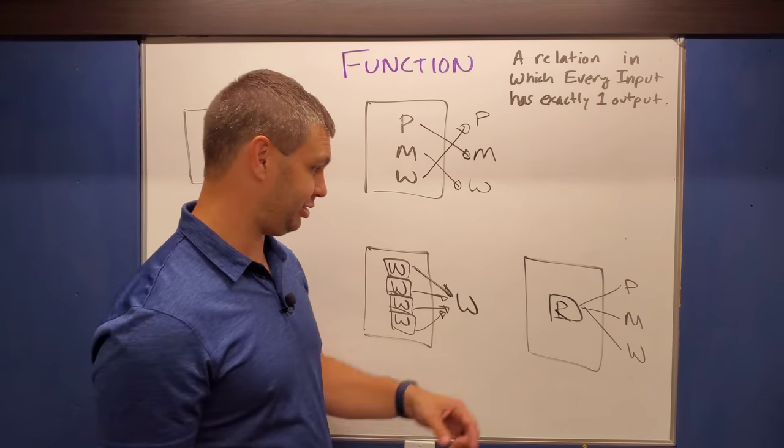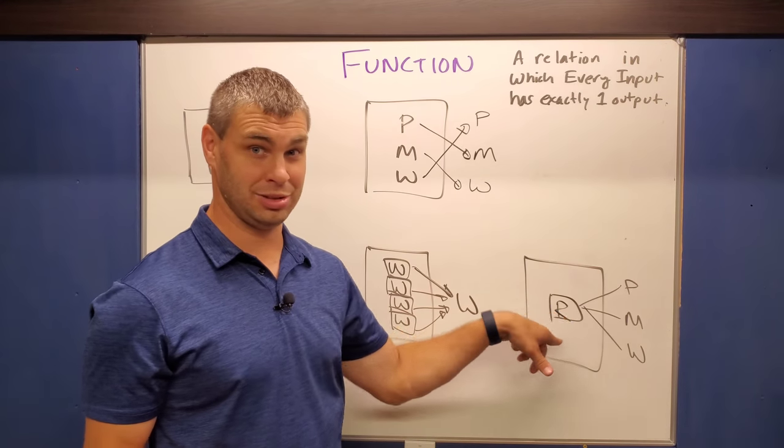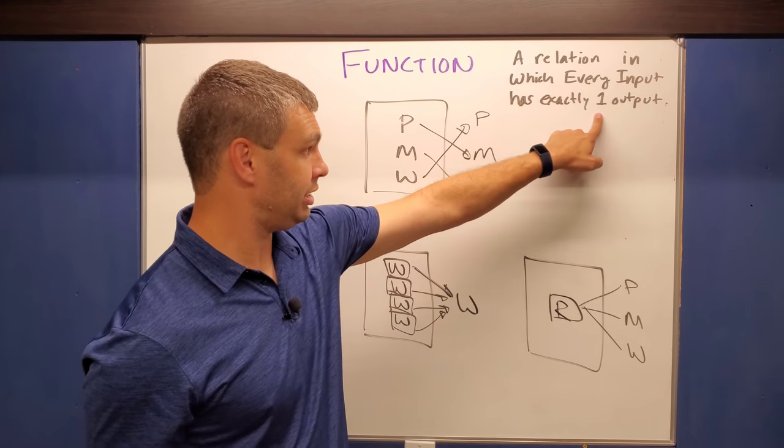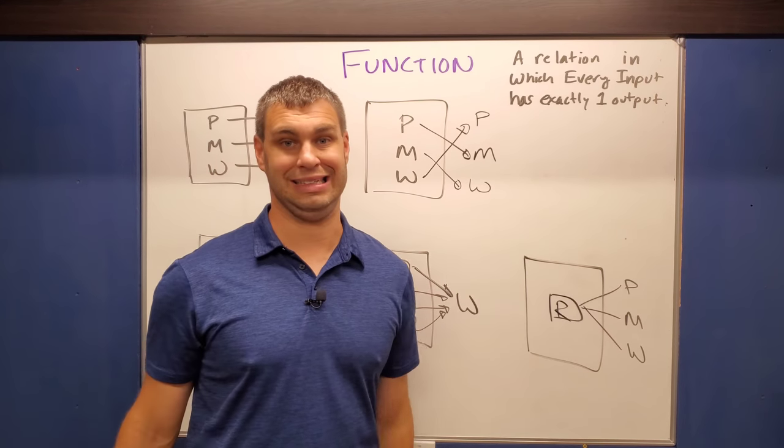No, it's not a function because when I hit that, I don't know what I'm going to get. Is it going to be a Pepsi? Is it going to be Mountain Dew? Or is it going to be a water? We don't know. And so because of that, there's more than one output, right? It could be a Pepsi, Mountain Dew, or water. It is not a function.